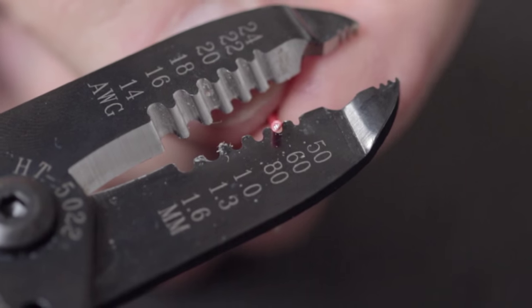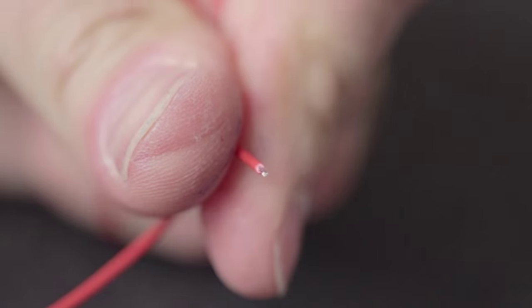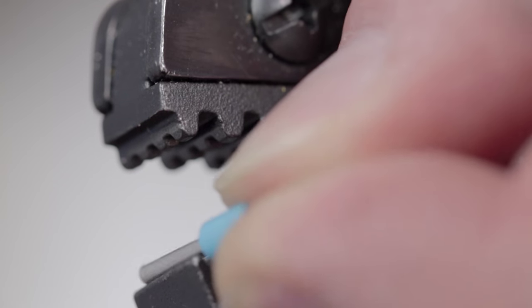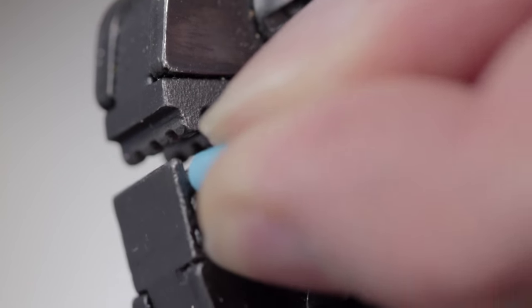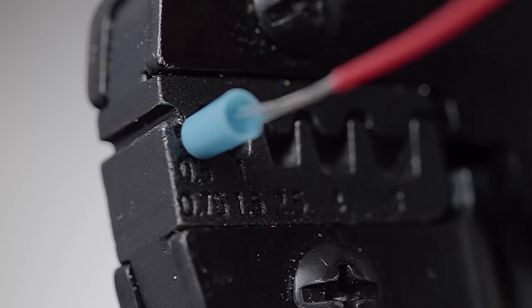First strip a 15 millimetre length of insulation off the wire. Insert the crimp into the appropriate size slot in a boot lace crimping tool and then insert the end of the wire without twisting it.